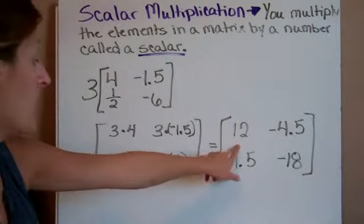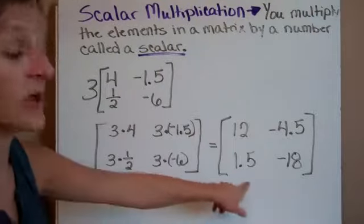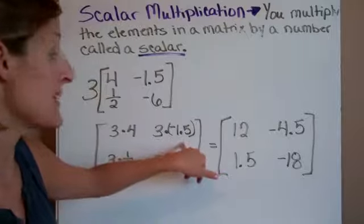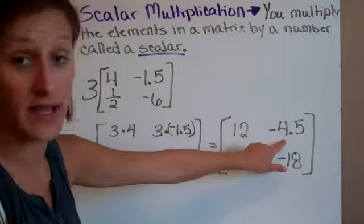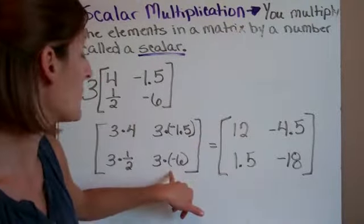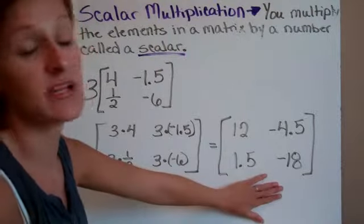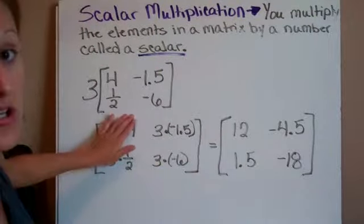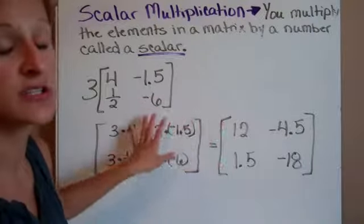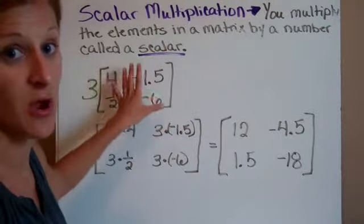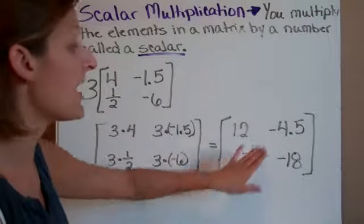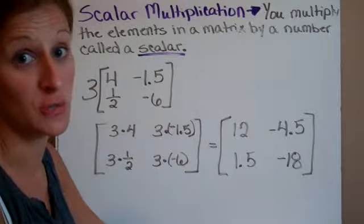When I do 3 times 4, I get 12. 3 times 1.5, I get 1.5. 3 times negative 1.5, I get negative 4.5. And 3 times negative 6, I get negative 18. Notice this matrix and this matrix are the same size. Your answer should still be the same size as your problem. And notice also I have brackets written around my new matrix.